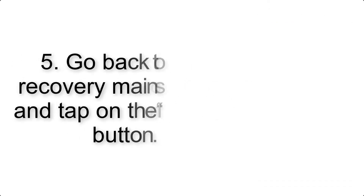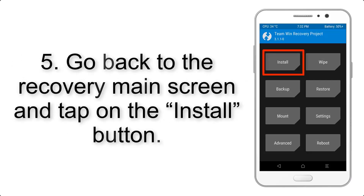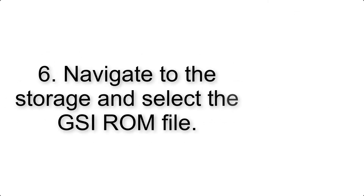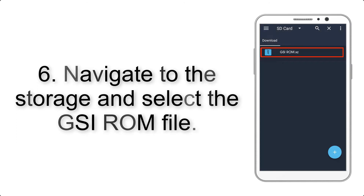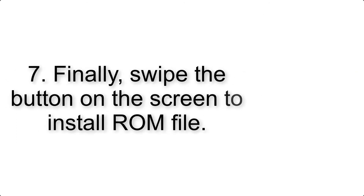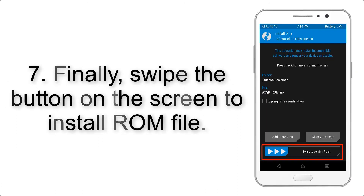Step 4: Swipe the button to wipe the device. Step 5: Go back to the recovery main screen and tap on the Install button. Step 6: Navigate to the storage and select the GSI ROM file.